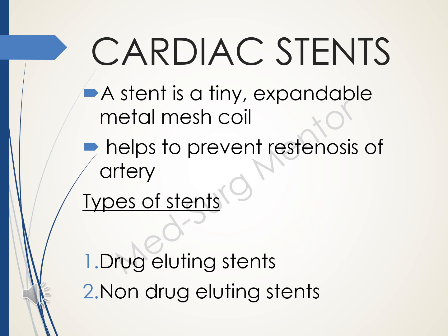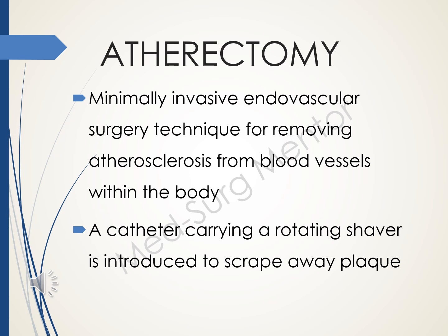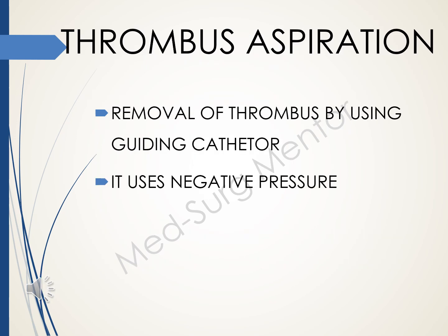Cardiac stents are tiny expandable metal mesh coils that help prevent restenosis of the arteries. There are two types: drug eluting stent and non-drug eluting stent. Atherectomy is a minimally invasive endovascular surgery technique for removing atherosclerotic plaque from blood vessels using a catheter carrying a rotating shaver. Thrombus aspiration means removal of thrombus using a guiding catheter with negative pressure.